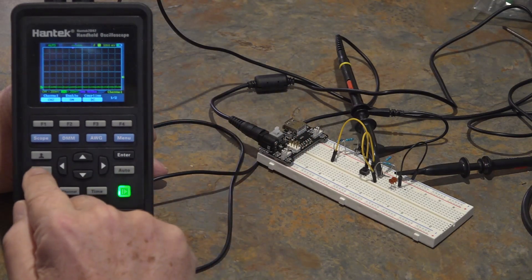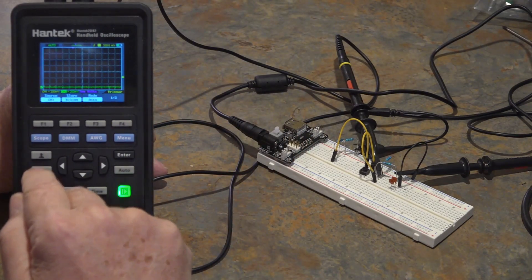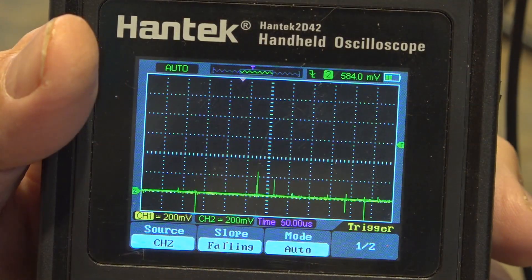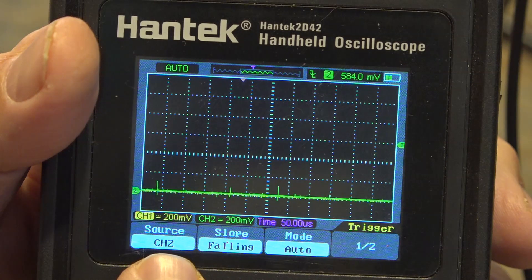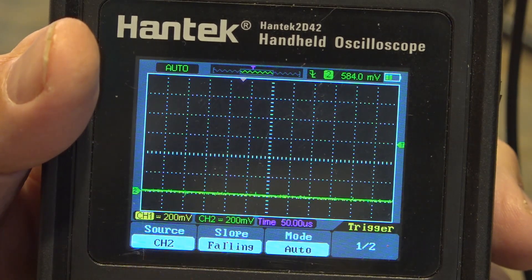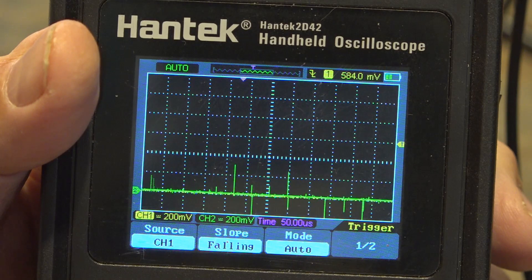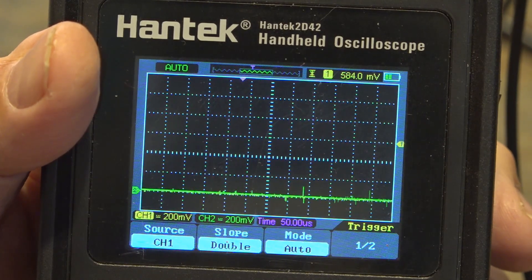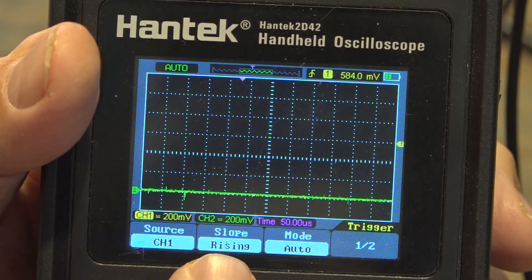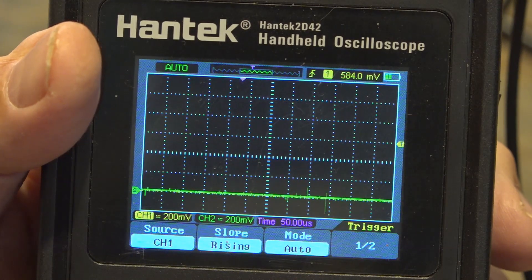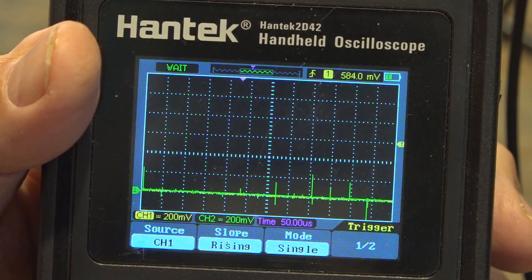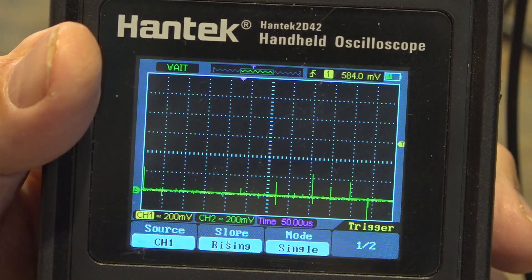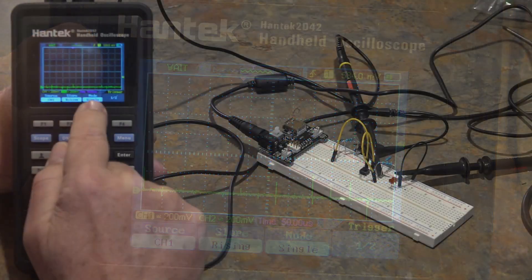Now what we have to do is set up the triggering. I'm going to hit the trigger button because we're looking for a single waveform - we're looking for a trigger event and then the waveform. Right now the trigger says I'm triggering on Channel 2. I actually want to trigger on Channel 1. The slope says falling - I want it to be on rising, and I don't want it on auto. I just want a single sweep, so I set that to single.